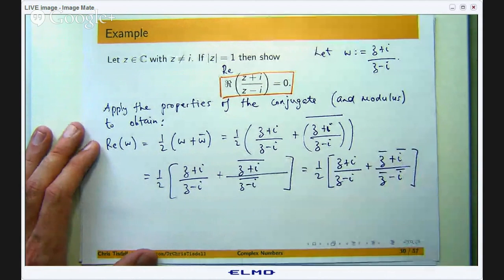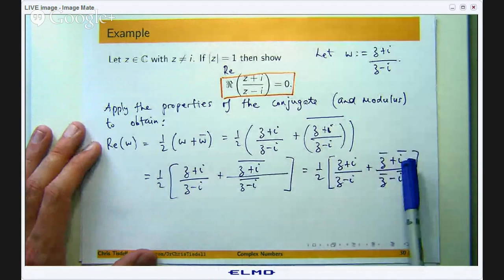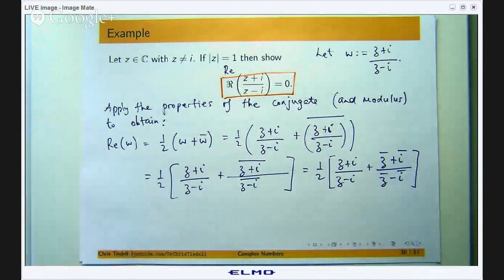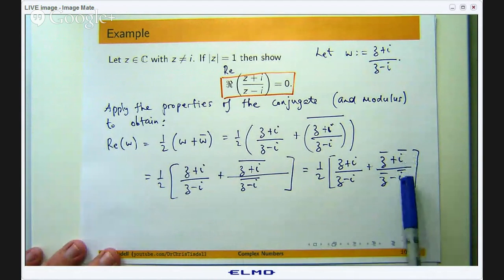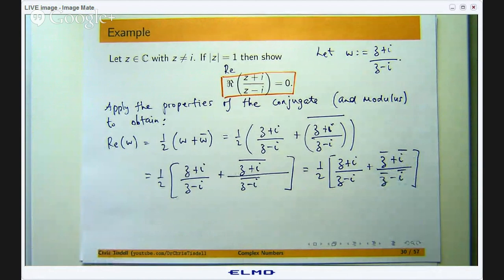Okay well I can keep simplifying here. What is the conjugate of i? Well it is negative i. So I can replace i bar with negative i there and i bar with negative i there. So on the top I am going to get z bar minus i and on the bottom z bar plus i.